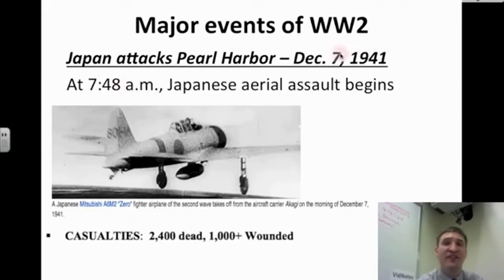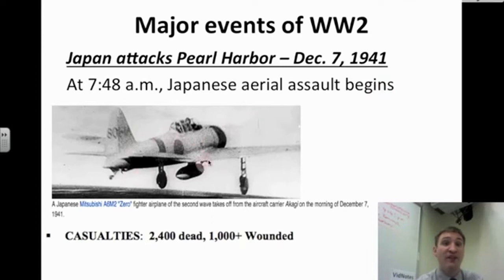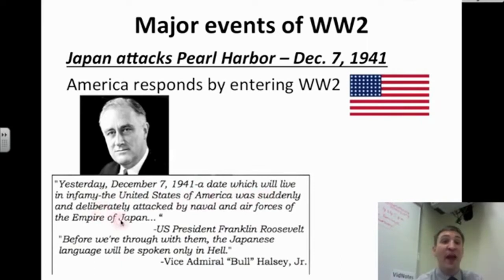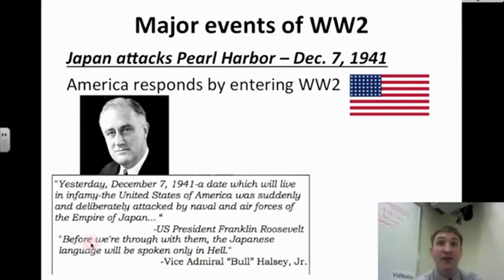At 7:48 a.m. on December 7th, the Japanese aerial assault begins. Many crewmen are still asleep in their bunks when they hear the explosions. In total, American casualties were 2,400 dead and more than 1,000 wounded. Franklin Roosevelt, in a famous speech, says: 'Yesterday, December 7th, 1941 — a day which will live in infamy — the United States of America was suddenly and deliberately attacked by naval and air forces of the Empire of Japan.' America is angry.